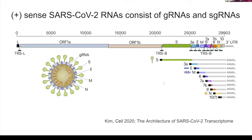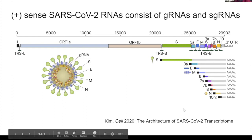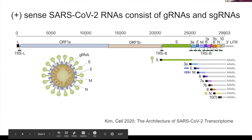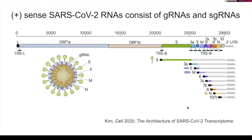If you're interested in binning reads into the subgenomic RNAs — for example, if you want to look at RNA modifications, as Milad is going to talk about later, and are interested in whether some modifications occur in one subgenomic RNA but not another — you want to be able to bin those reads. The way you would do this is with the workflows I'm going to talk about.